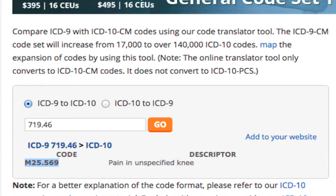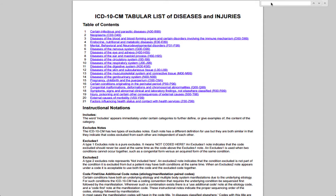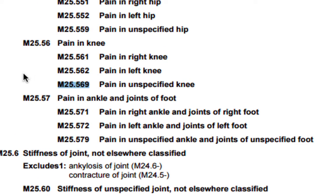But even though it looks like this code is the definitive equivalent of 719.46 — after all, it's the only ICD-10 code that appeared in the search results — we have to double check within the tabular list to be sure. If we head over to the tabular list and search for the code, we'll see that there are actually options for both the left and right knees. Both of these are more specific than the original code, and because we probably know which knee is causing pain for the patient, we should account for that laterality in our code selection.